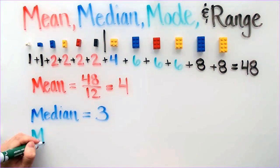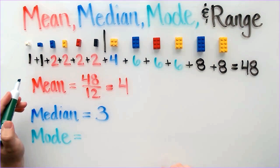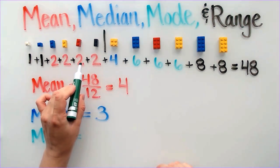The mode is the number that occurs the most. I can see that 2 occurs 4 times. This means that 2 is the mode.